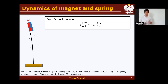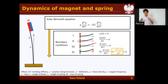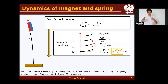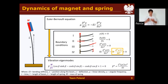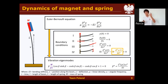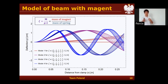Now we take the next step: we add a mass to the end, and once again apply the boundary conditions, but the fourth boundary condition changes because we have an extra inertia term. When we apply the changed boundary conditions, we get the new vibration eigenmodes. In this equation, we have a crucial dimensionless parameter, which is the mass ratio — the ratio between the mass at the end of the beam and the mass of the beam itself. We can see how this important dimensionless number changes the shape of several different modes of oscillation.